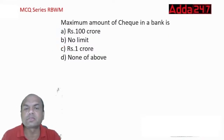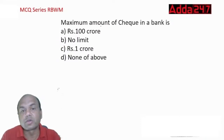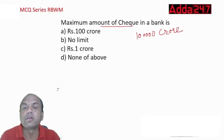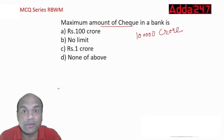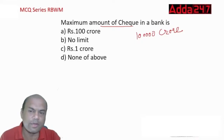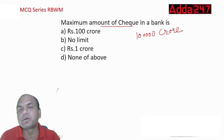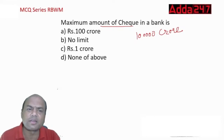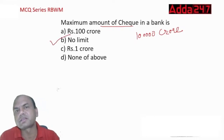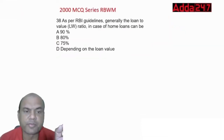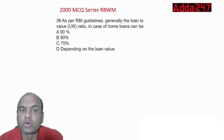The maximum amount of a cheque has no limit — you can write a cheque for any amount, even one lakh crore, as long as you have the balance. The minimum can also be as low as 50 paise.